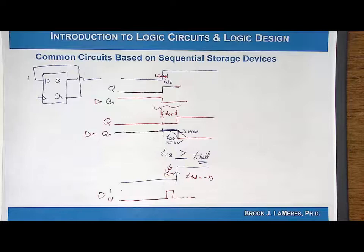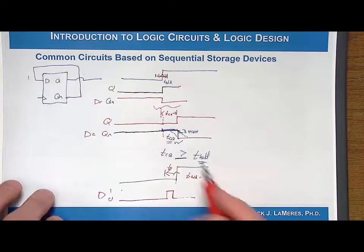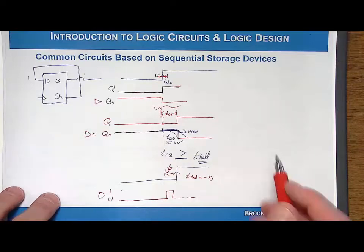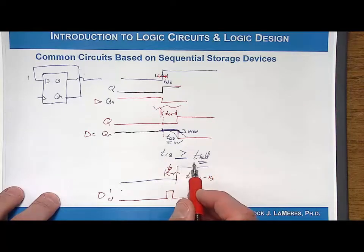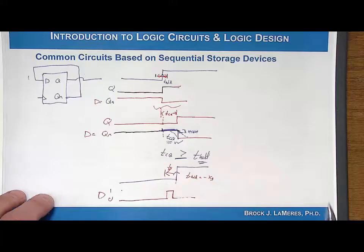But this is just a timing consideration of a toggle flop. Toggle flops are very common. They're used to divide down clocks. They're used to clean up clocks. You have 50% duty cycles. But there's just one timing consideration that you have to remember. The T clock to Q has to be greater than or equal to the hold time or else you'll have a hold time violation.